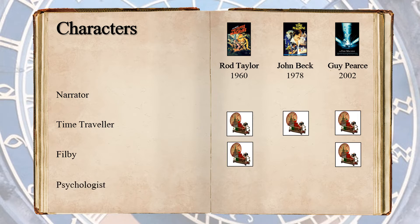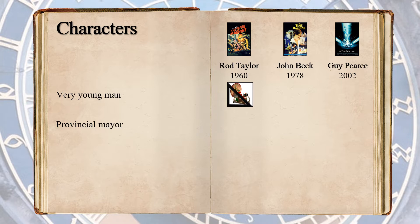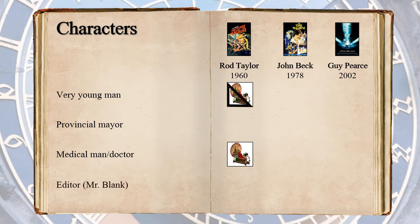A psychologist is a dinner guest at both dinners and doesn't appear fully in any version. Beck gets a partial point for the psychologist, as a character in that version sets the mini time machine in motion, as the psychologist does in the book. There is a very young man described in the book as having a cigar, but no other details. The Taylor version gets a partial point for this character for including a character smoking a cigar, but he's not young. There is no character referred to as a provincial mayor in any version. A medical man or doctor appears only in Taylor, and in this version he is the one to send the mini machine into time. An editor named Mr. Blank is at the first dinner but doesn't appear in any version.